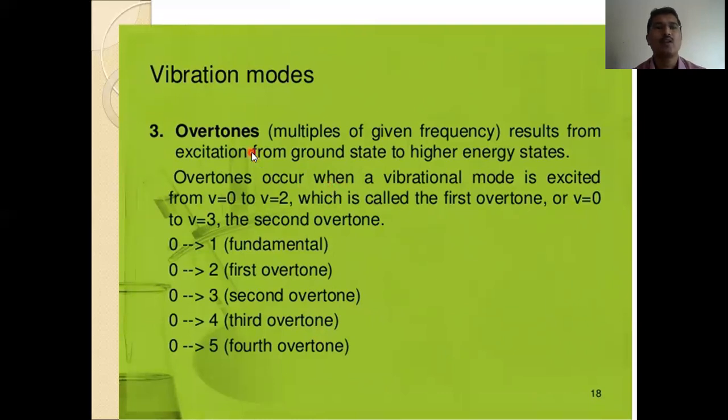Vibration modes. Overtone, multiples of the given frequency result from the excitation from the ground state to the higher energy state. Overtone occurs when a vibrational mode is excited from V0 to V2, which is called the first overtone or V0 to V3, the second overtone. We can see here, 0 to 1, that is fundamental, 0 to 2, first overtone, 0 to 3, second overtone, 0 to 4, third overtone, and here fourth overtone, like that.